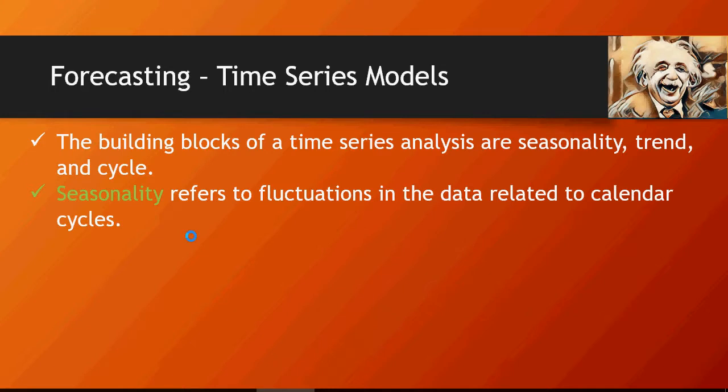Seasonality is basically if there are fluctuations in the data related to a calendar year. For example, the sale of air conditioning would go higher during the summertime. Or the sale for sweaters or warm jackets, clothes would go higher during the winter season. So seasonality refers to any product bump in product sale or increase in product sale or quantity based on seasonality.